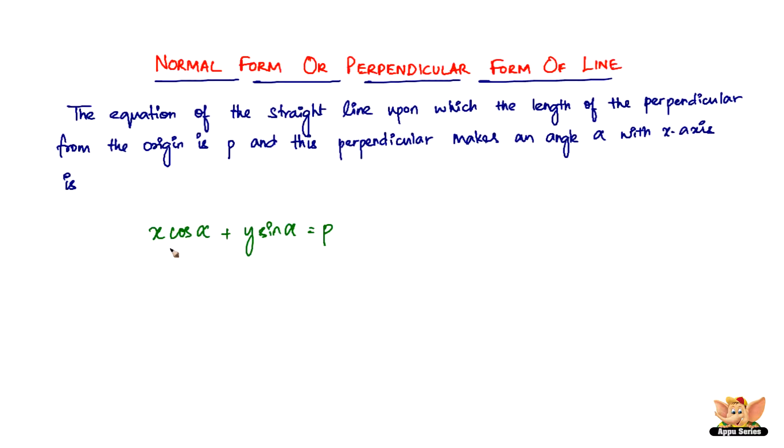So x cos α plus y sin α equals P is the normal form or perpendicular form of a line. To make more sense of what we've already said, let's consider the rectangular coordinate axis which is x-o-x' and y'-o-y.